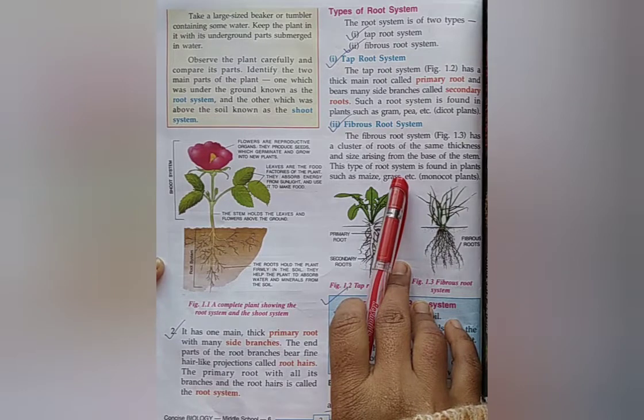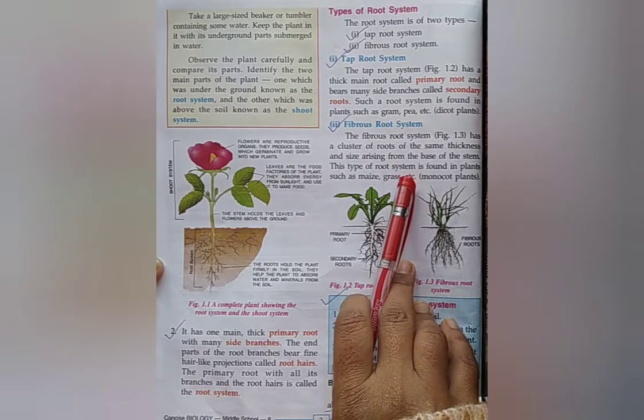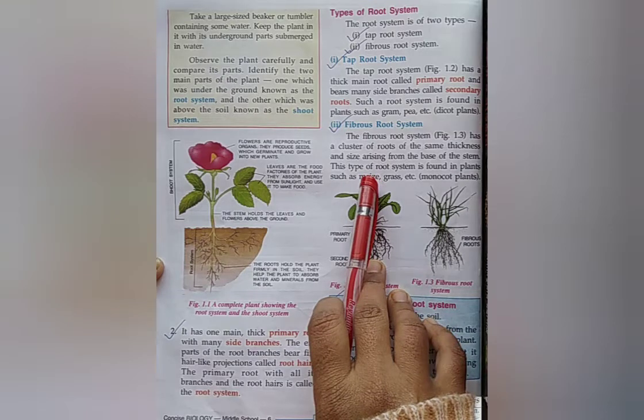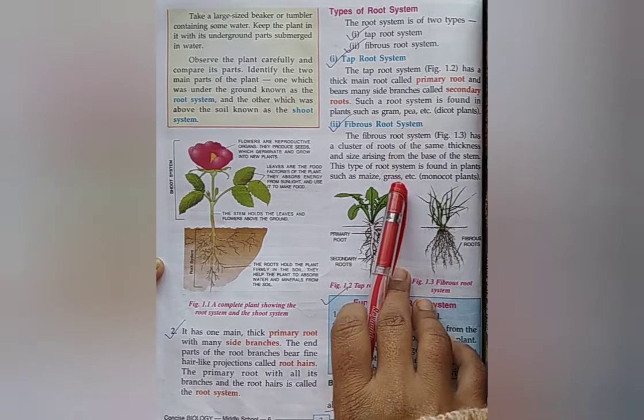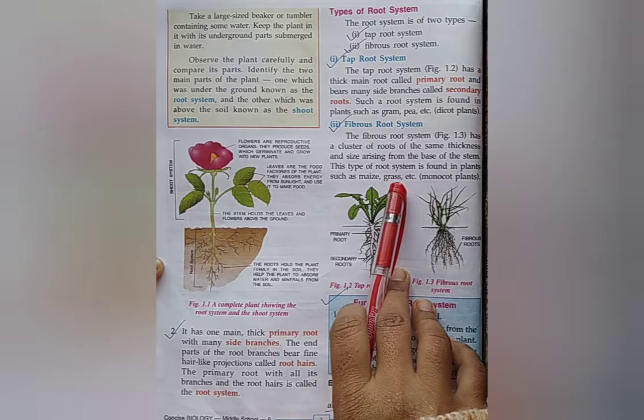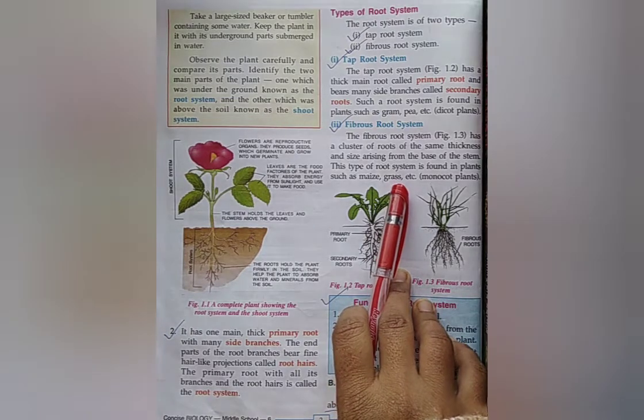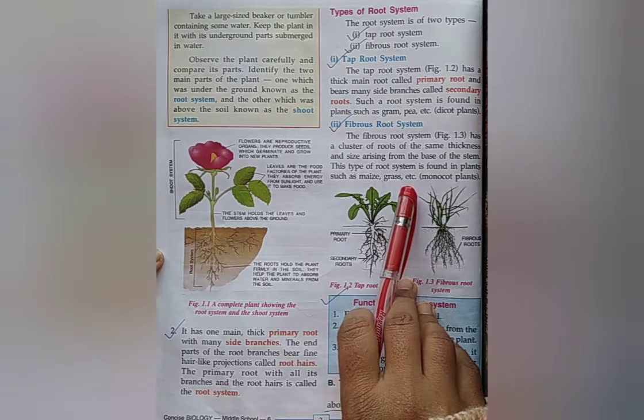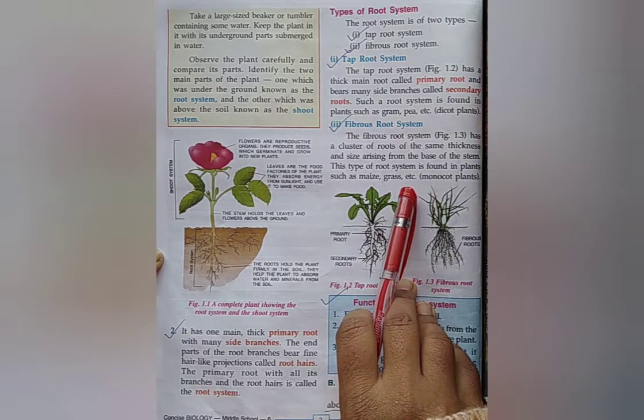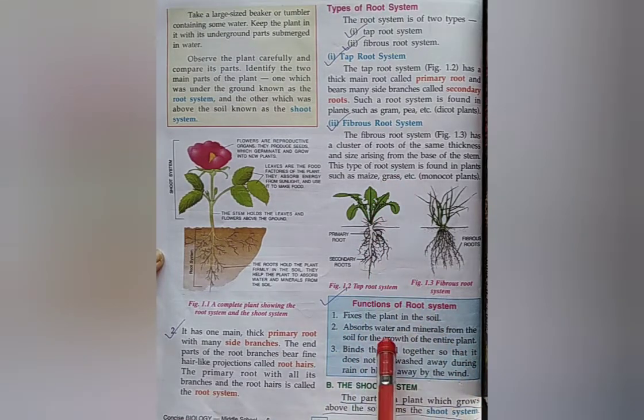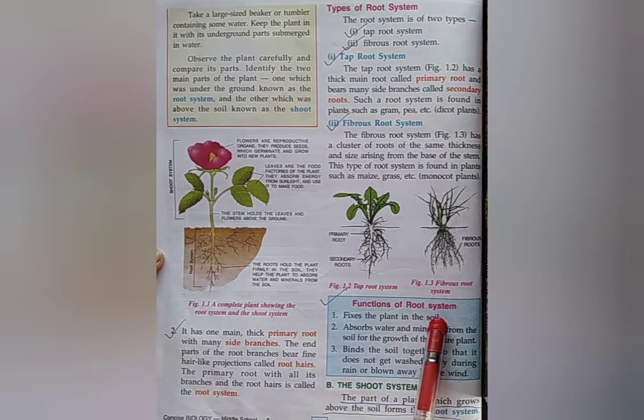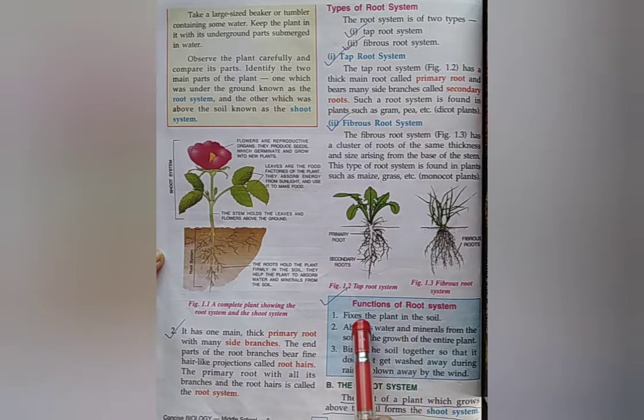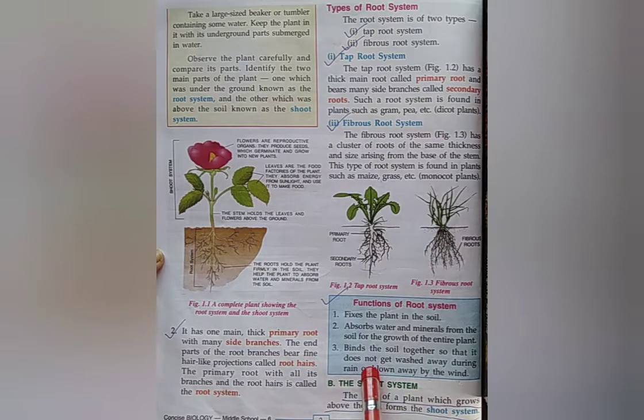Tap root system is found in which plant? Answer: Gram, pea, carrot, etc., dicot plants. What is fibrous root system? The fibrous root system has a cluster of roots of the same thickness and size. Fibrous root system is found in which plants? Maize, grass, orchid, etc., monocot plants. Next, functions of root system.